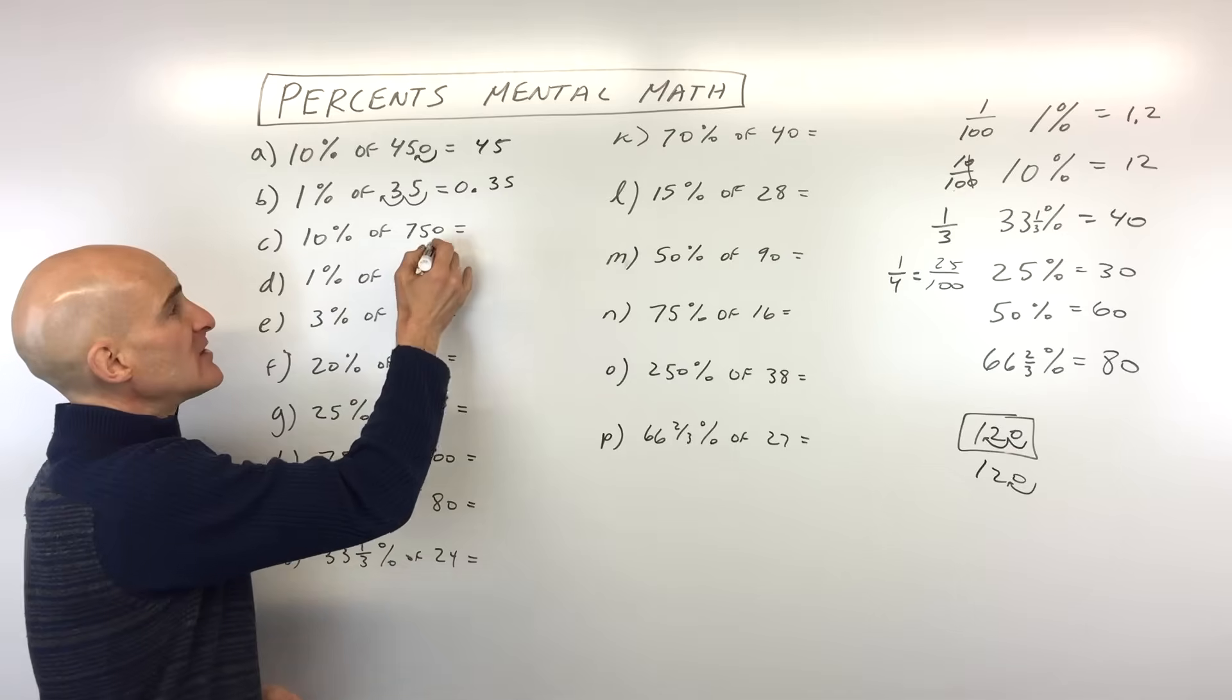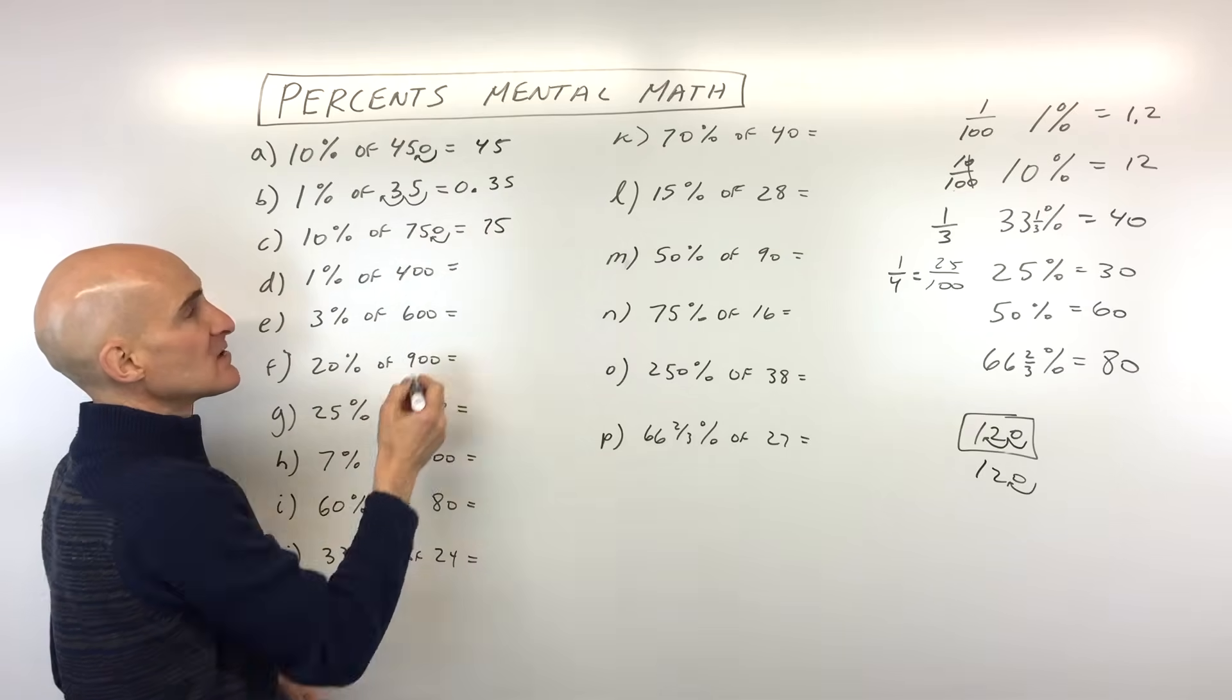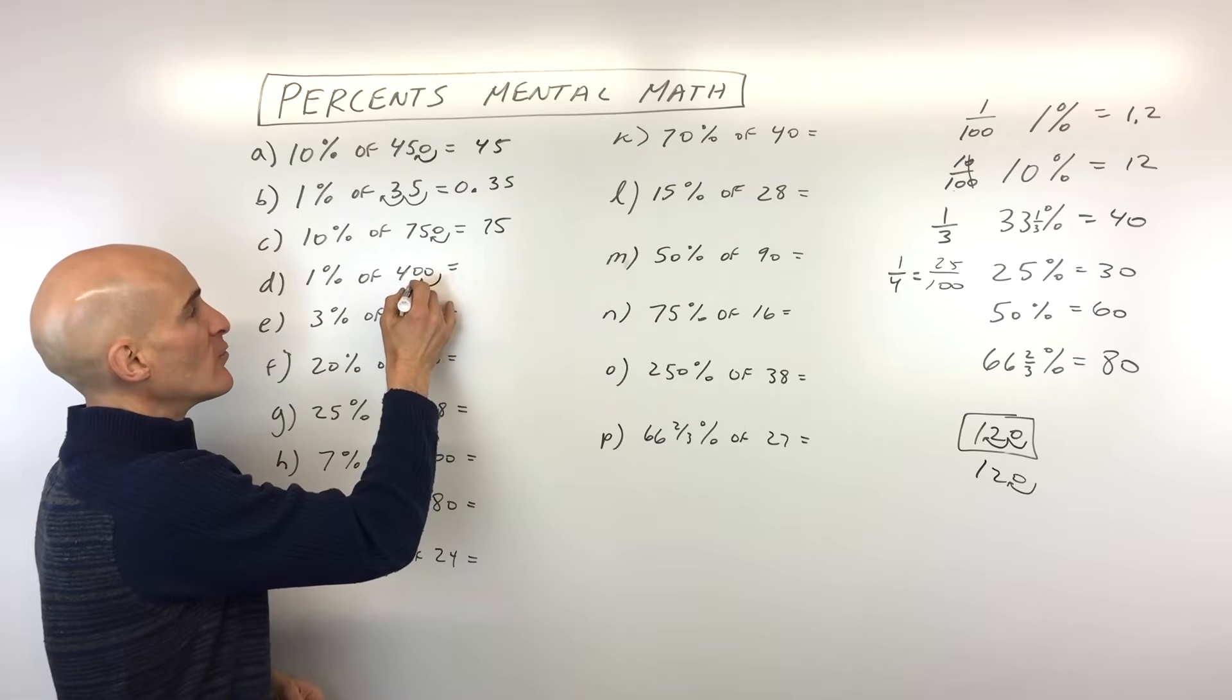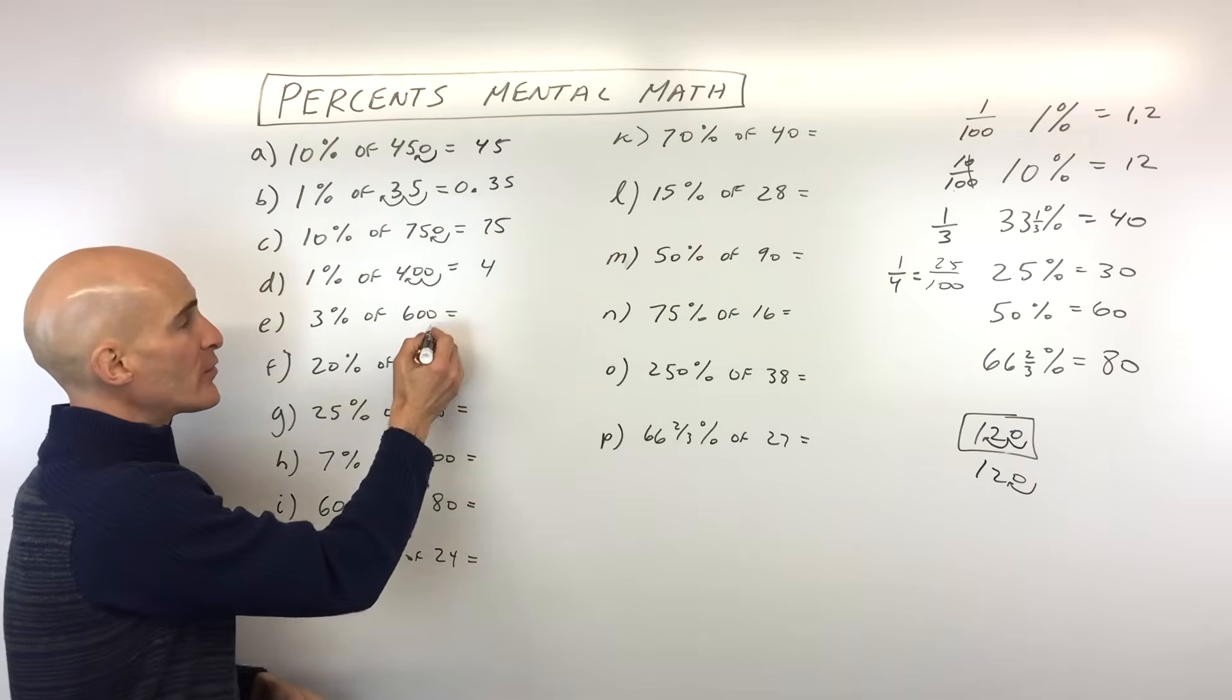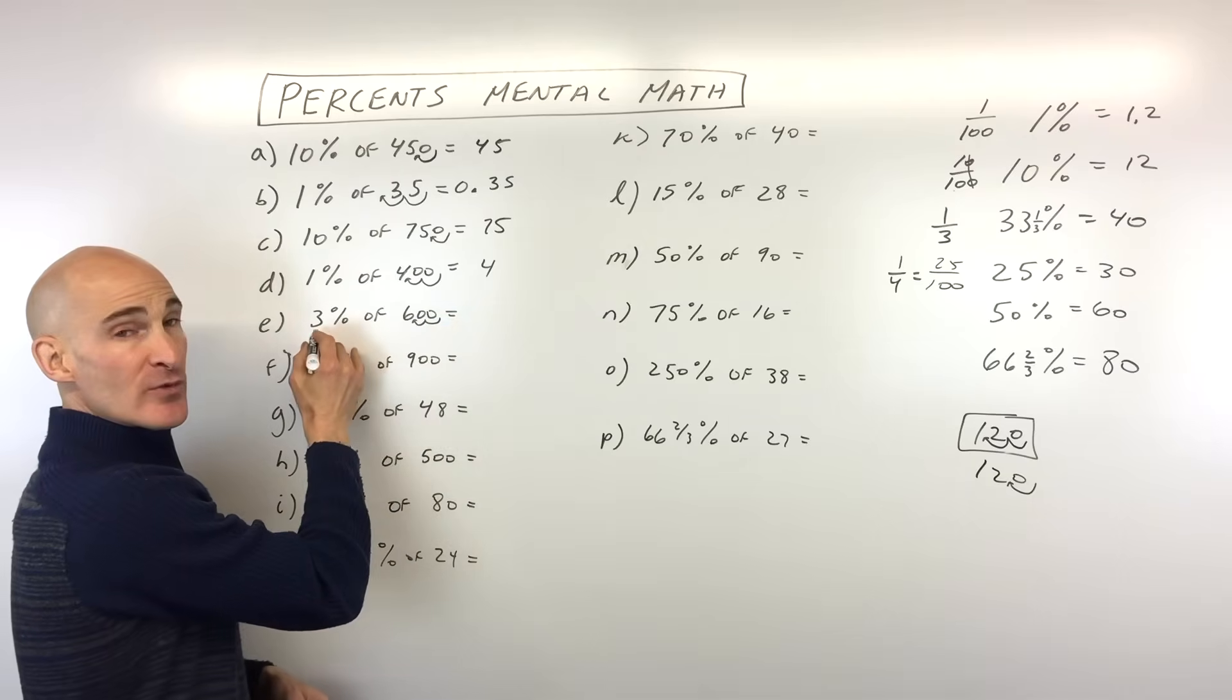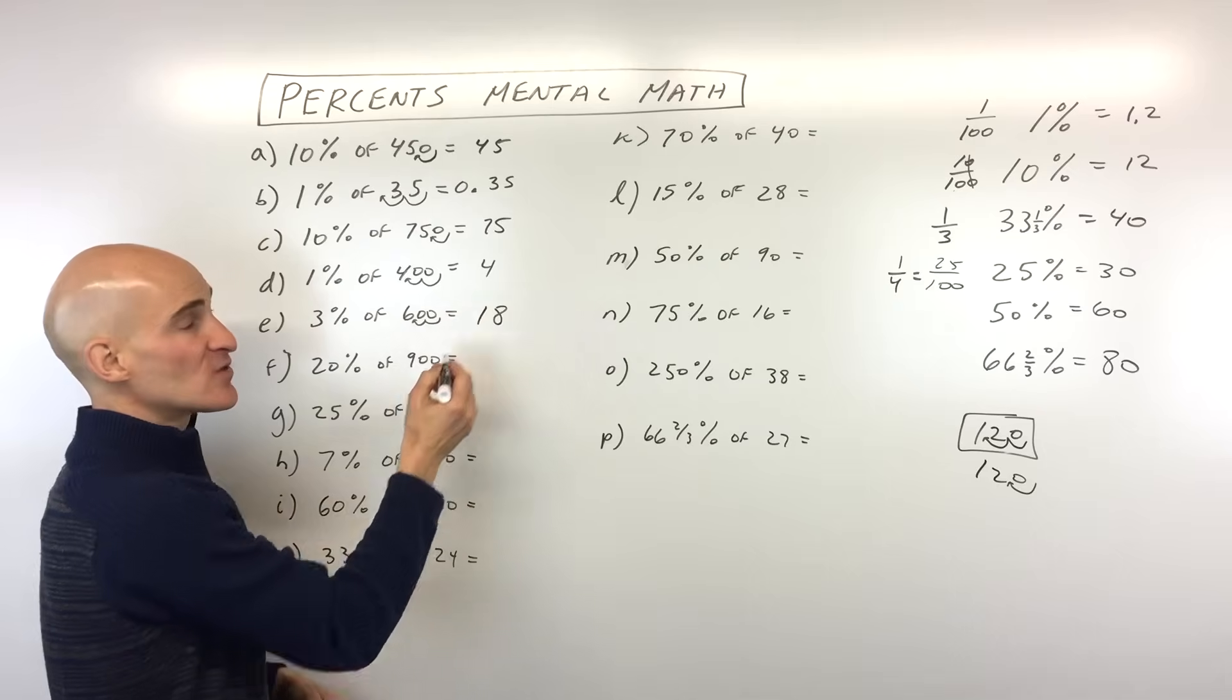We're at 0.35, or you could write it as 0.35. 10% of 750, same thing. 10% where it's like dividing by 10, you move that decimal one place to the left. 1% of 400, we move it two places to the left. So that's going to be four. 3% of 600, a little bit more challenging. Well, let's find out what 1% is. We move that two places. That's going to be six. That's 1%. But we want three times as much, 3%. That's going to be three times six, which is 18.